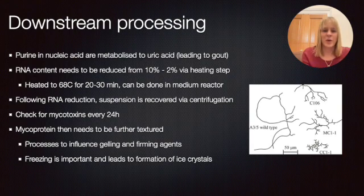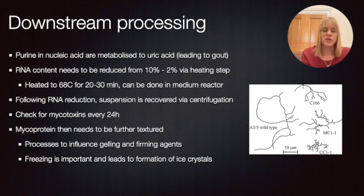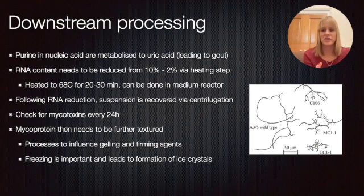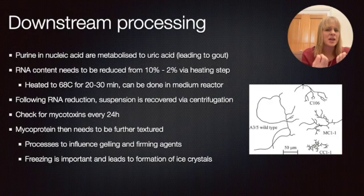We harvest the fungal biomass, but that's not directly what Quorn is - there are a lot of different steps after that. When related to food, you need to give it a specific consistency. There will be influence of compounds that can gel it and firm it up. Eggs were used before, but there are specific proteins you can add that gel up the structure. What seems really important for Quorn is that it is actually frozen for a while - up to weeks. Ice crystals form, and that's what really helps to firm up the structure to make it even more like meat.